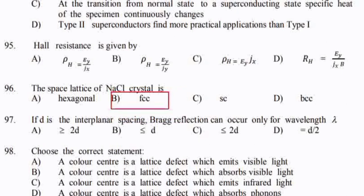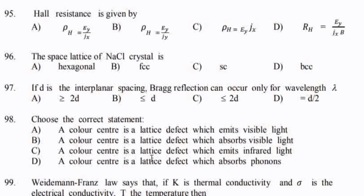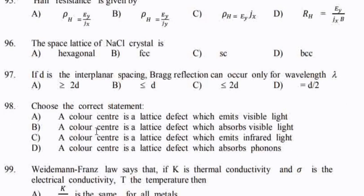If D is the interplanar spacing, Bragg reflection can occur only for wavelength lambda satisfying the condition — option C: lambda less than or equal to 2D.